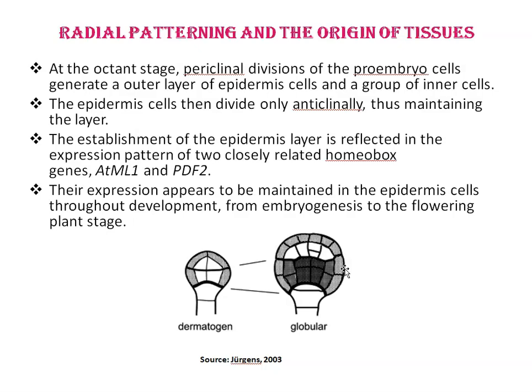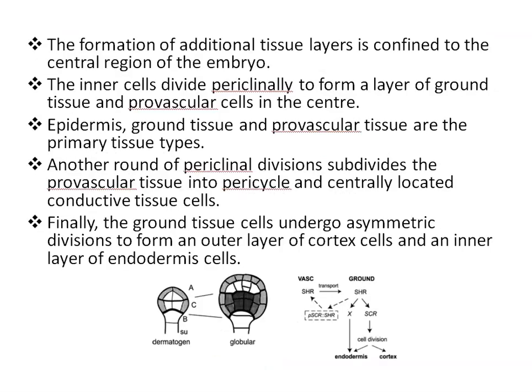The establishment of the epidermis layer is reflected in the expression pattern of two closely related homeobox genes, ATML1 and PDF2. Both genes are initially expressed in all pro-embryo cells up to the octant stage, but subsequently only in the epidermis cells, and their expression is maintained in epidermis cells throughout development from embryogenesis to the flowering plant stage. Inner cells then divide periclinally to form a layer of ground tissues and provascular cells in the center. Epidermis, ground tissues, and provascular tissues are the primary tissue types.